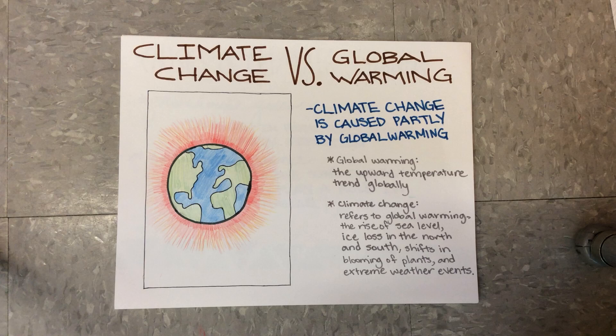People commonly get climate change and global warming confused. Climate change is caused partly by global warming. Global warming is the upper temperature trend globally, while climate change refers to global warming, the rise of sea level, ice loss in the north and south, shifts in blooming of plants, and extreme weather events.